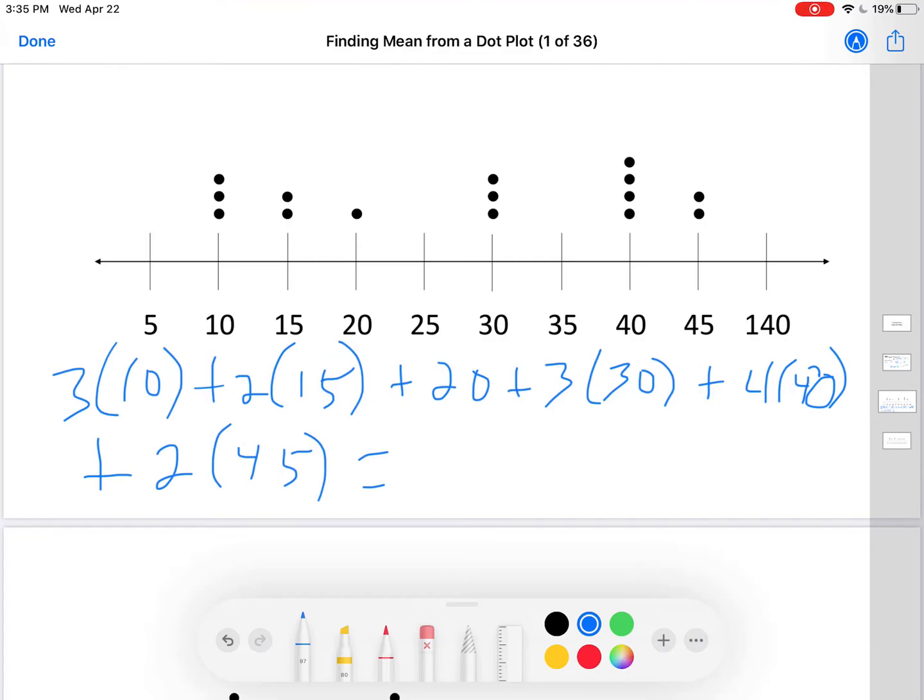3 times 10 plus 2 times 15 plus 20 plus 3 times 30 plus 4 times 40 plus 2 times 45 equals 420. If you did this on your calculator and you did not get 420, it's because you're not using a scientific calculator.